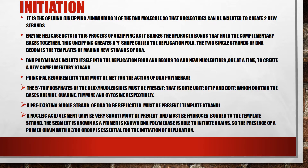The two single strands of DNA become the templates for making new DNA strands. After forming the replication fork, DNA polymerase inserts itself into the replication fork and begins to add new nucleotides one at a time in order to create a new complementary strand.